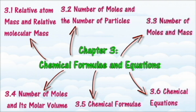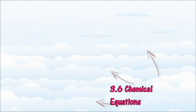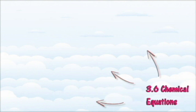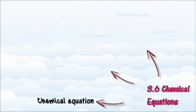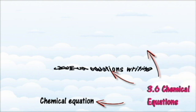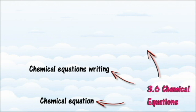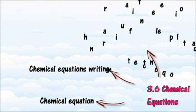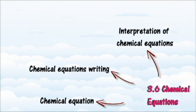At the end of this chapter, Section 3.6, we will learn about the way to interpret chemical equations for a chemical reaction. At the end of this section, you should be able to state the meaning of chemical equation, identify the reactants and products of a chemical equation, write and balance chemical equations, interpret chemical equations quantitatively and qualitatively, and solve numerical problems using chemical equations.